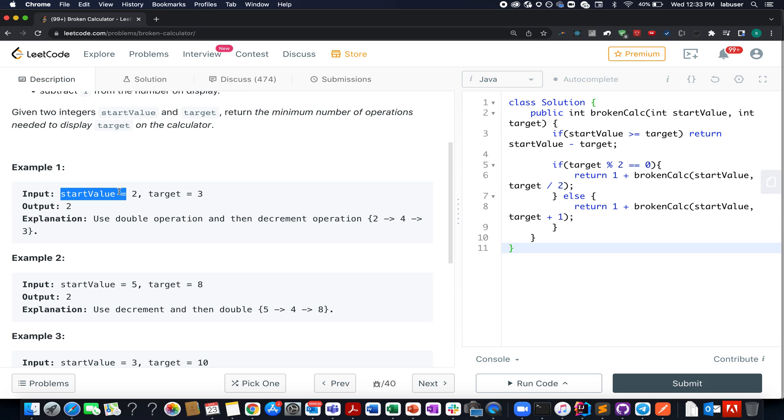Let's walk through a few examples. Here they have provided us with start value as 2, target as 3. So what do we do? We multiply this number by 2, we get 4 and subtract 1 from it, we get 3. How many operations in totality have we performed? 2.